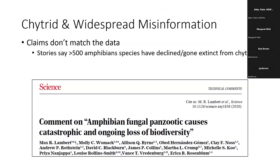A few years ago, a paper that got a lot of attention made the conclusion that over 500 species of amphibians around the world have either declined or gone extinct because of chytridomycosis infections. In the case of frogs, that's almost 20% of amphibian diversity impaired by this single pathogen. That's the story and narrative that has really been ingrained in us — that this pathogen is really impacting amphibians everywhere, including right here in our own homes.